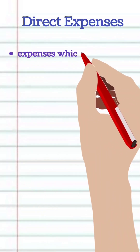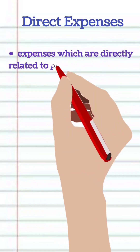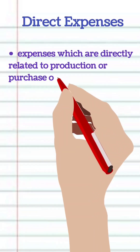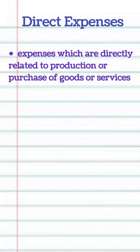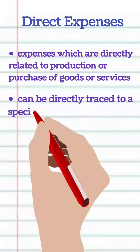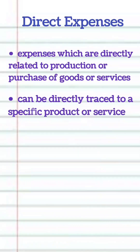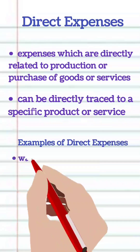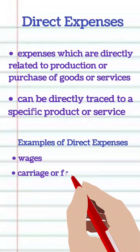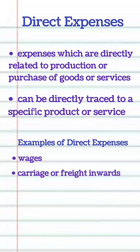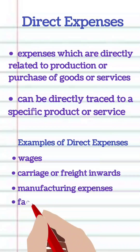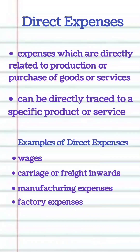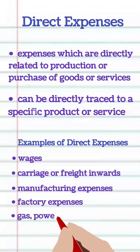Direct expenses are expenses which are directly related to production or purchase of goods or services. They can be directly traced to a specific product or service. Examples include wages, carriage inwards, manufacturing expenses, factory expenses, gas, power, fuel.